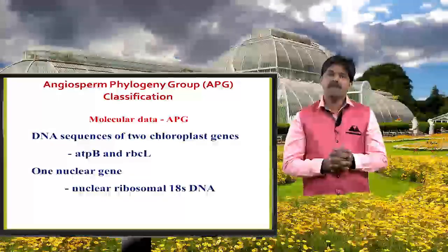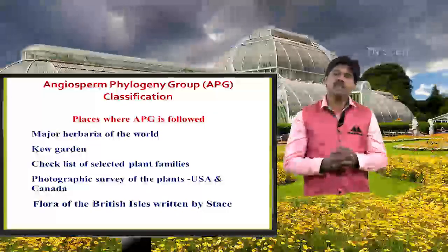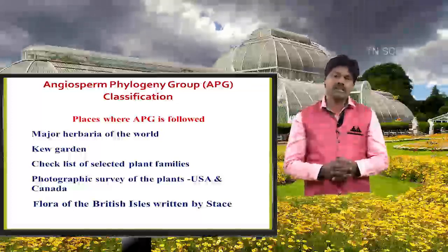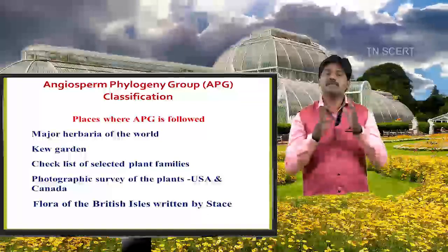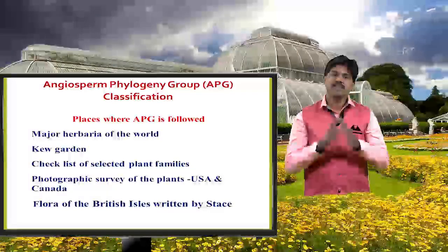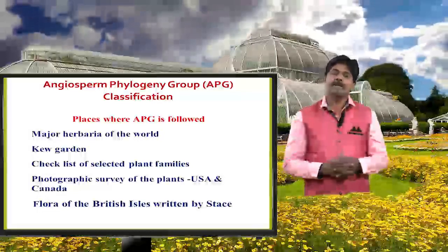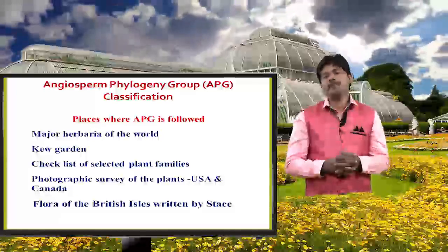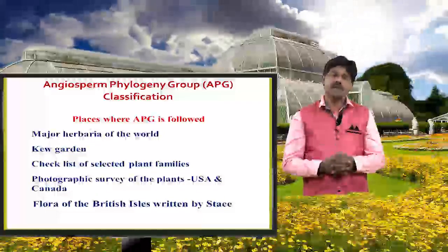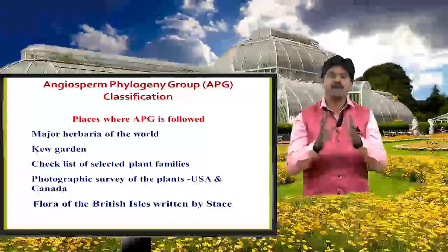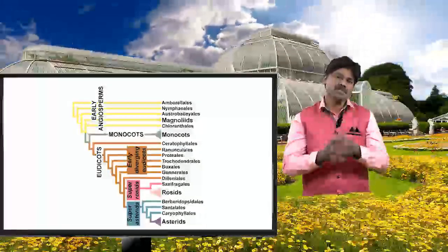APG is used in most herbaria of the world, including the Royal Botanic Gardens, Kew. The floristic survey of plants of the USA and Canada has been updated to APG. The flora of the British Isles written by Stace has also been updated to APG, along with many important plant families.